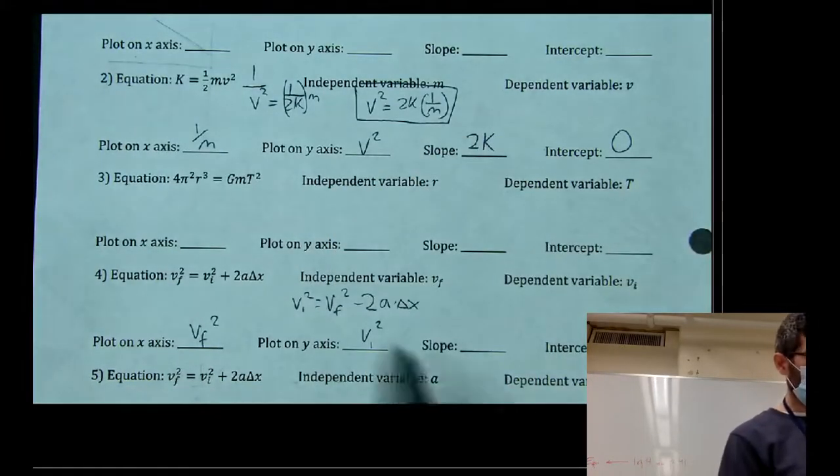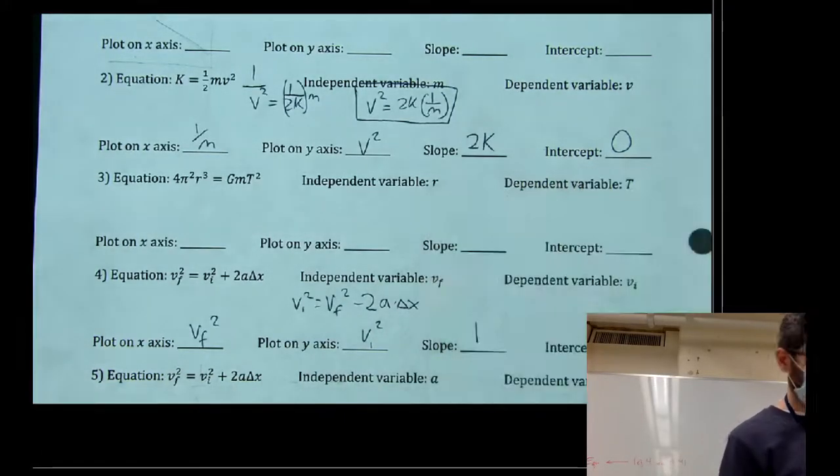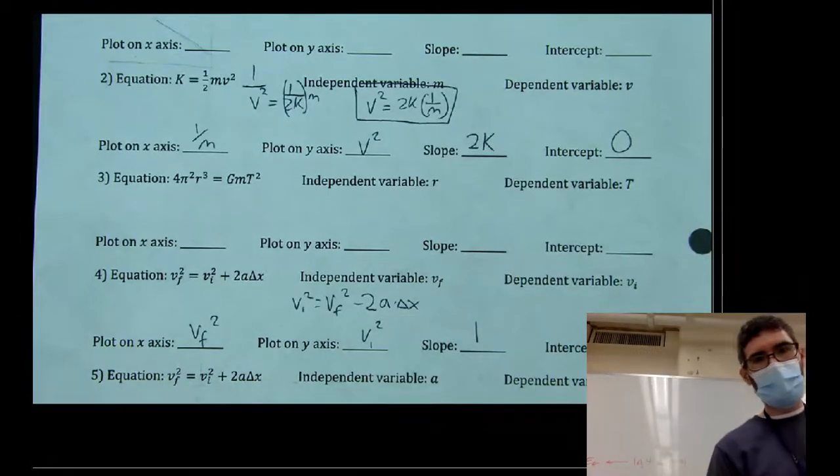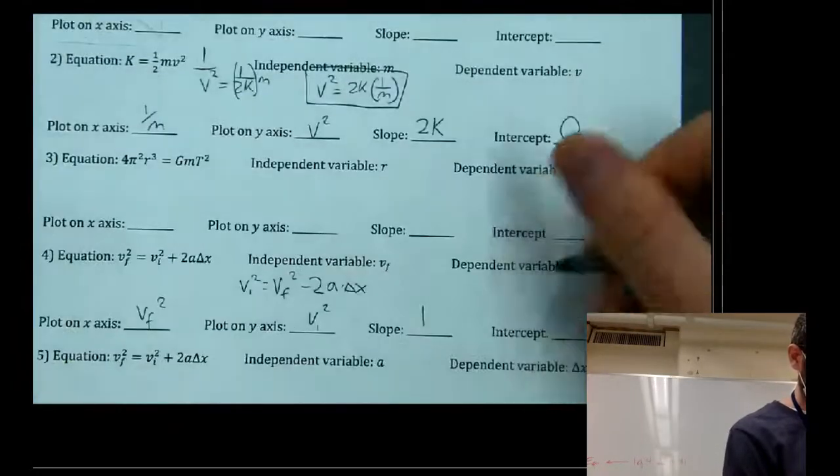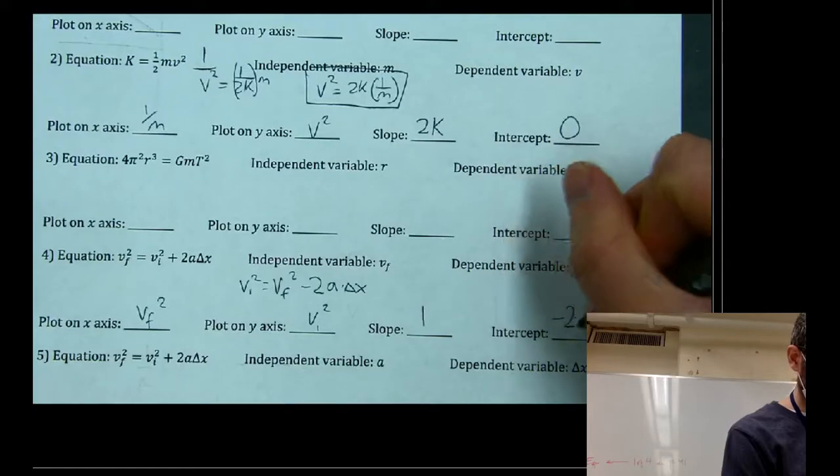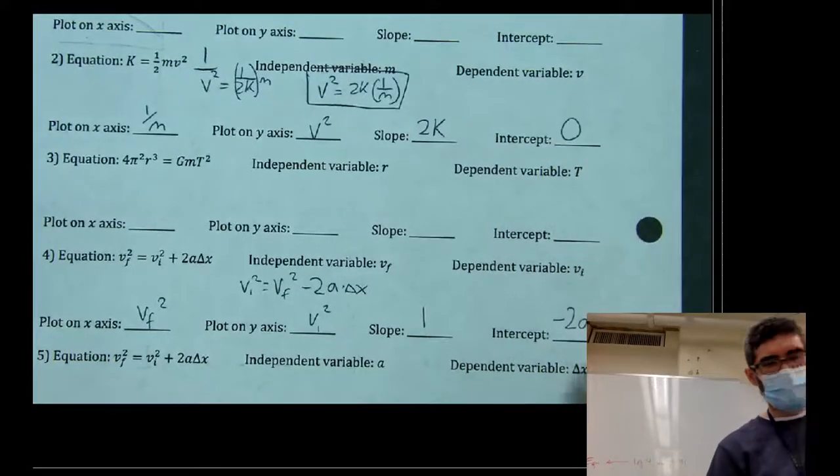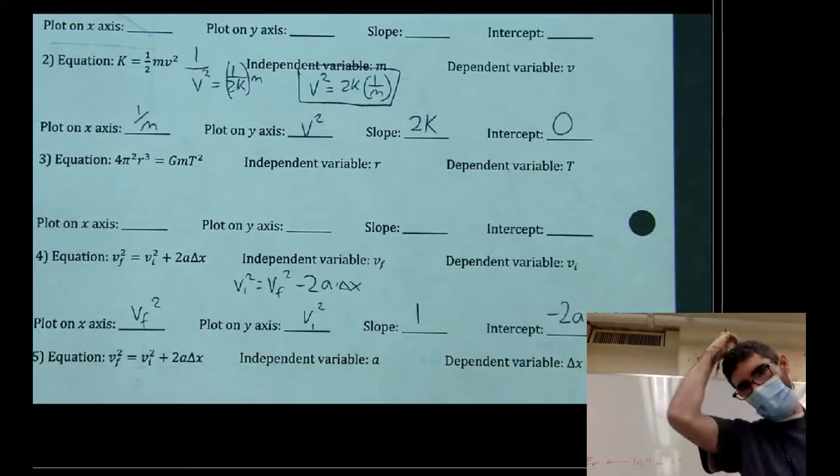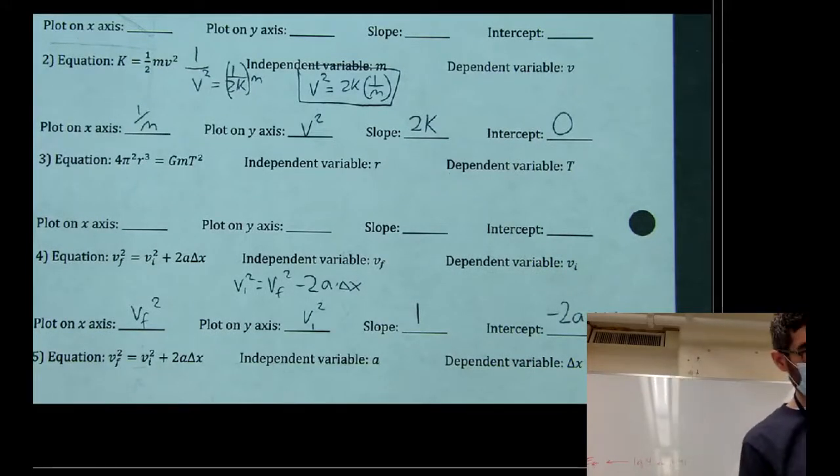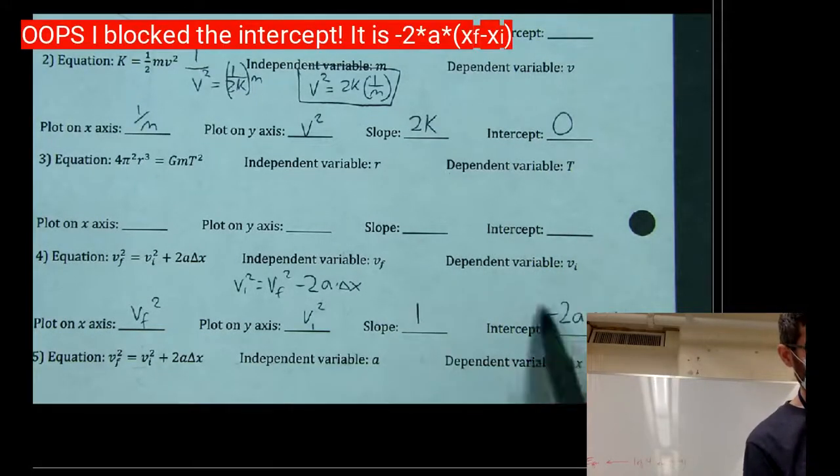And notice there's no constant multiplying the independent variable. So we should see a slope of 1 if this model works. And then interestingly enough, we have this negative intercept, negative 2A times delta X. So sometimes the information you really want to get out of your graph, it might not be in your slope. It might actually be in your intercept.